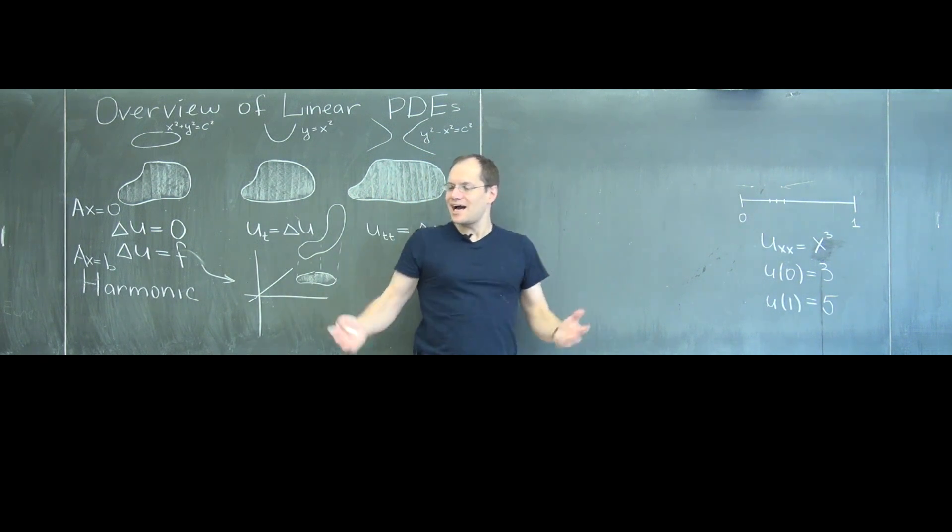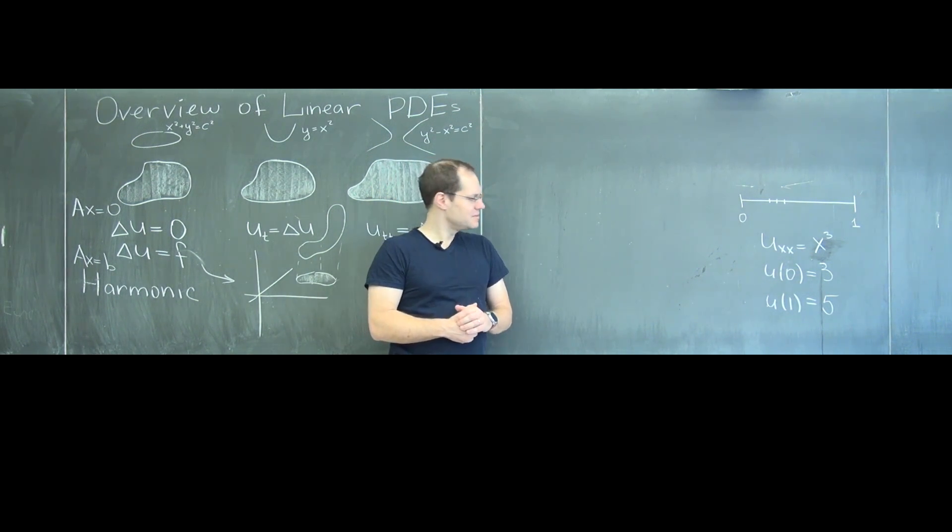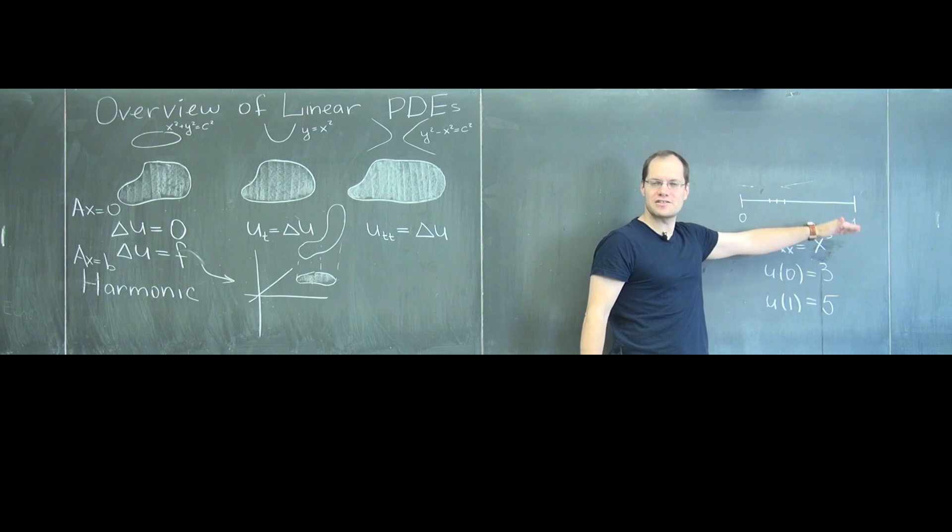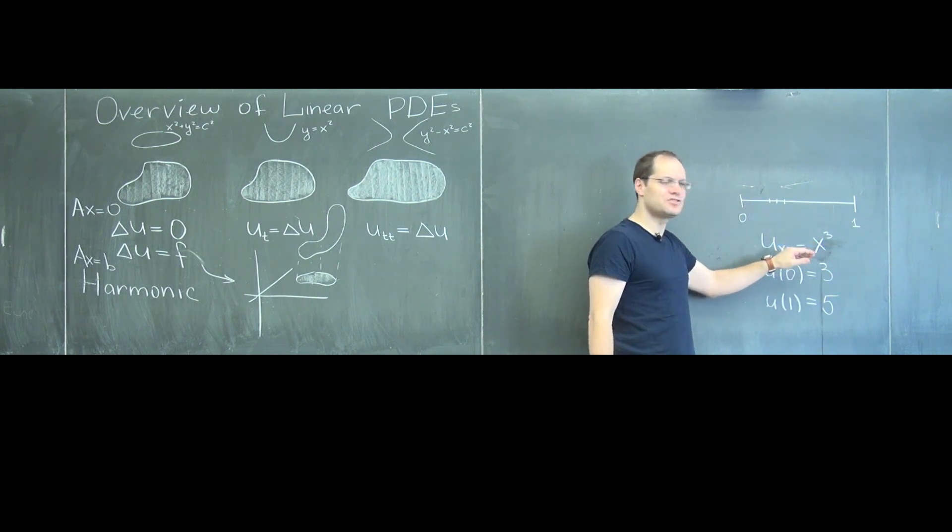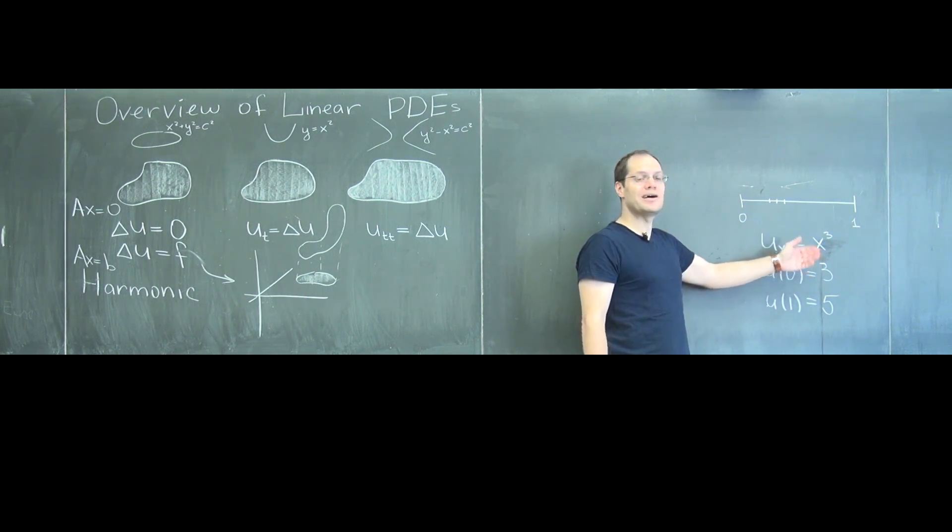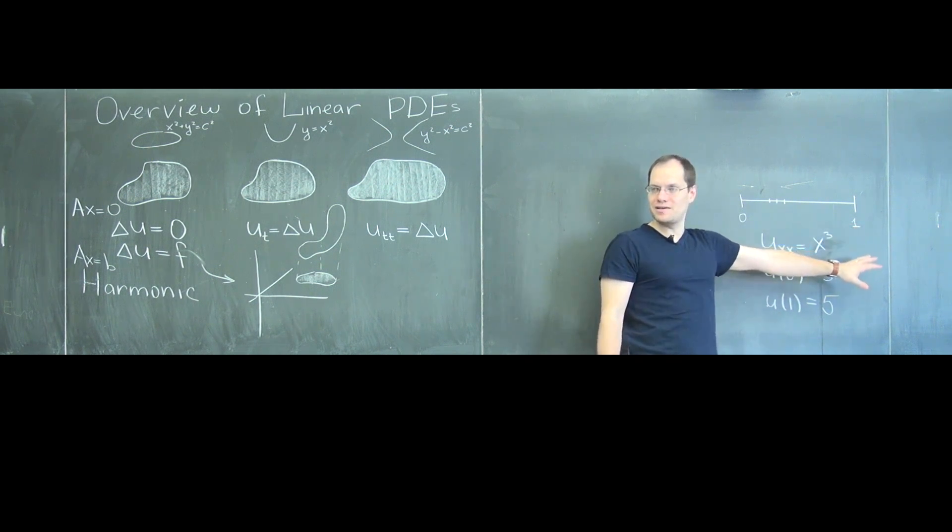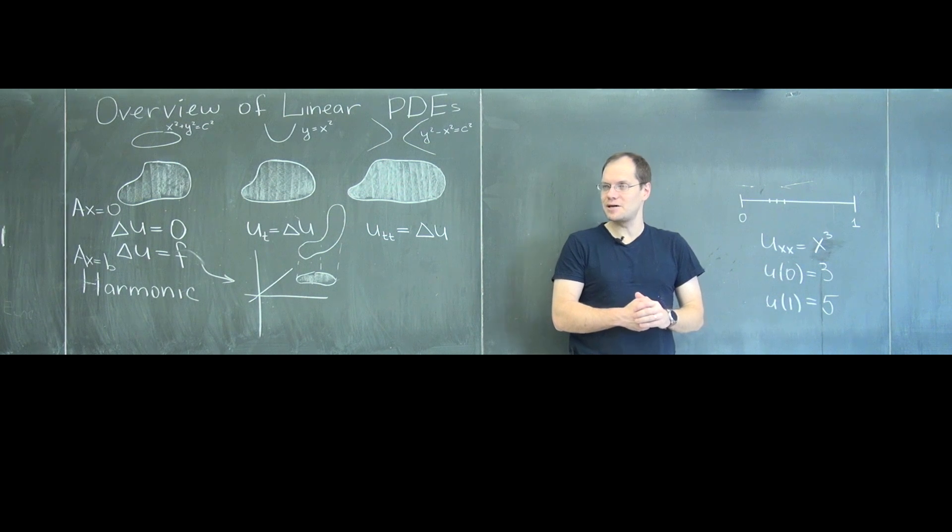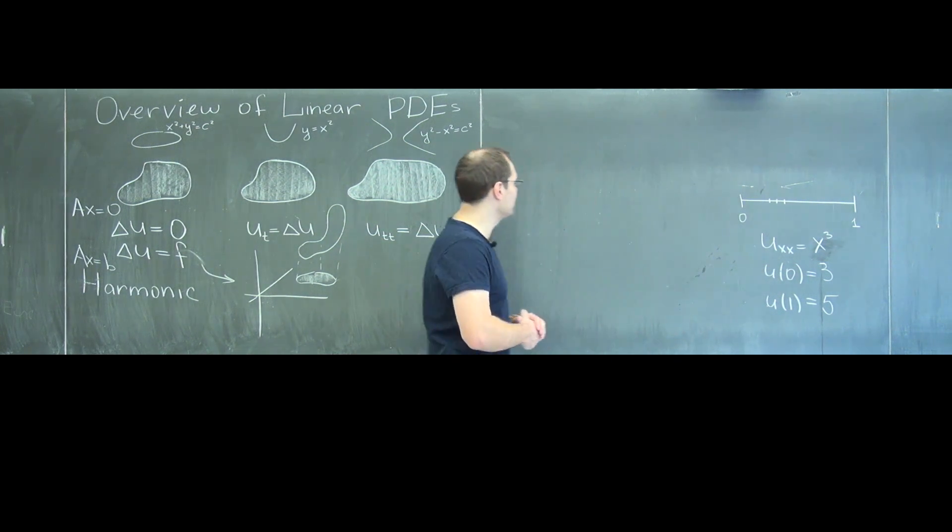And once again, we could use the calculus way of thinking, saying that if the second derivative is x cubed, then the first derivative is one quarter x to the fourth plus a constant, and the function itself is one twentieth x to the fifth plus ax plus b. That's the calculus way of thinking about it. We're not going to use the calculus way of thinking about it, we're going to use the linear algebra way of thinking about it.